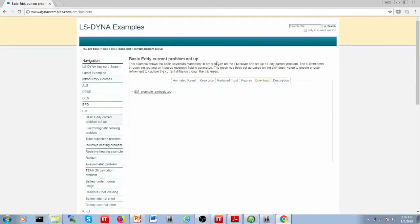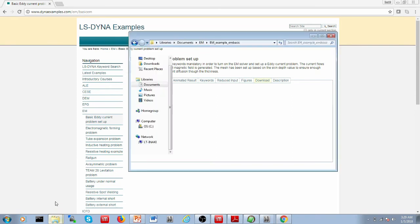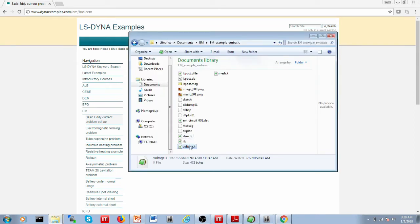Now again, if I show you the input deck, where to find it, you can find it on the DYNA example website. It's the example, which is called basic eddy current problem setup. And here you have the download section, where you can download this .zip file, where you will find the various input decks, .k files.